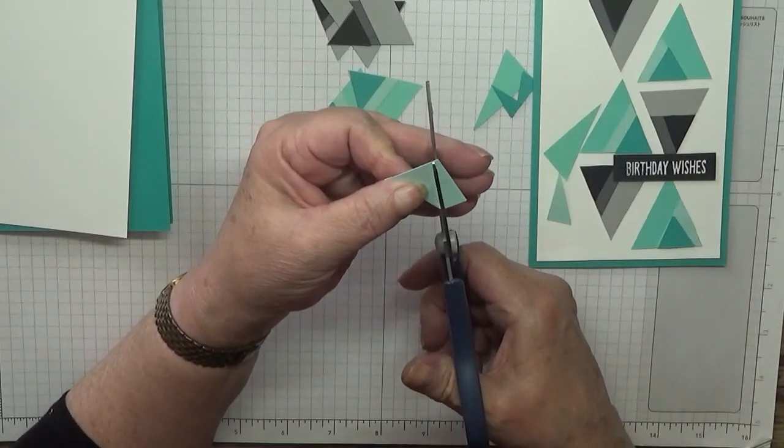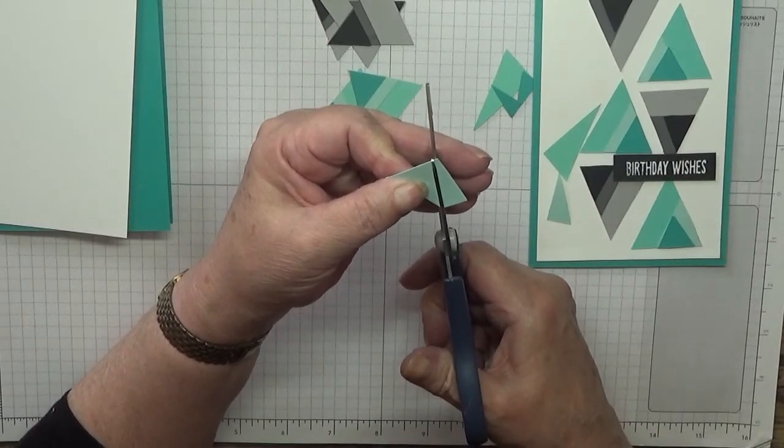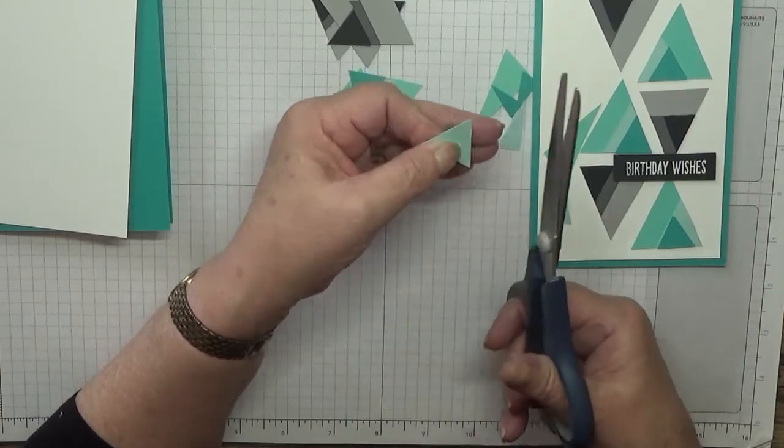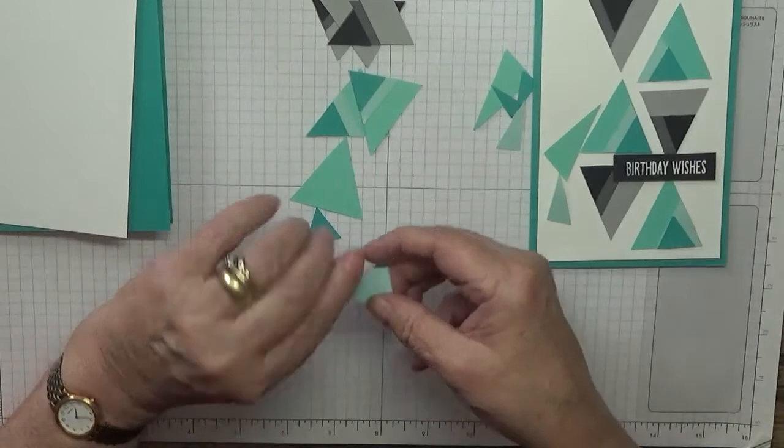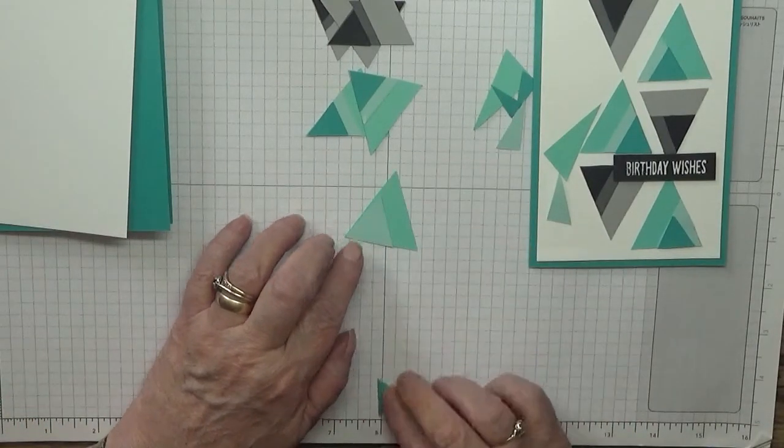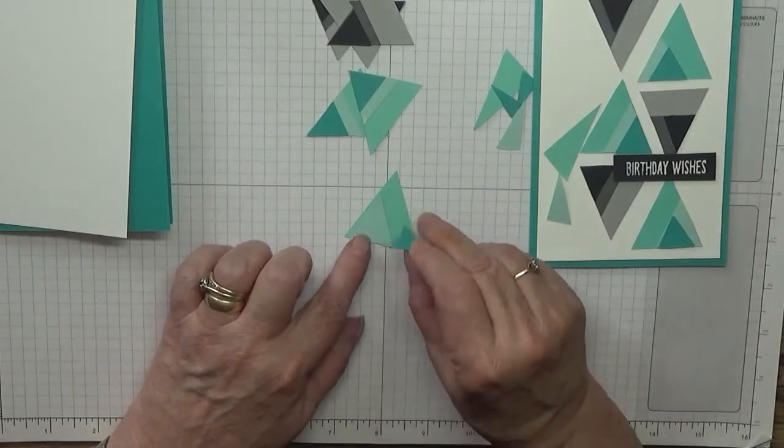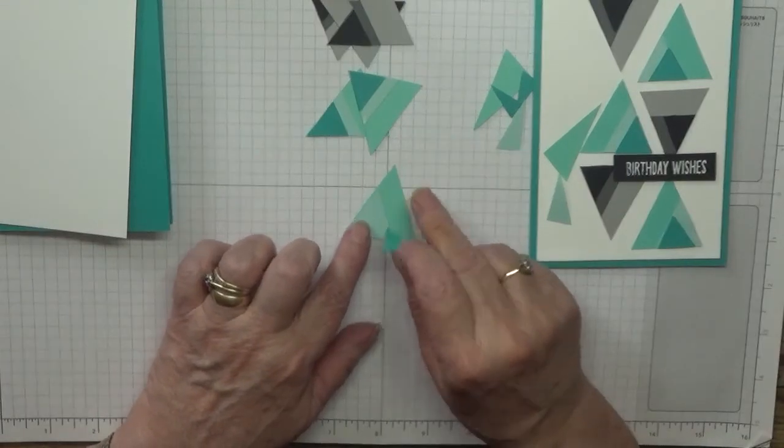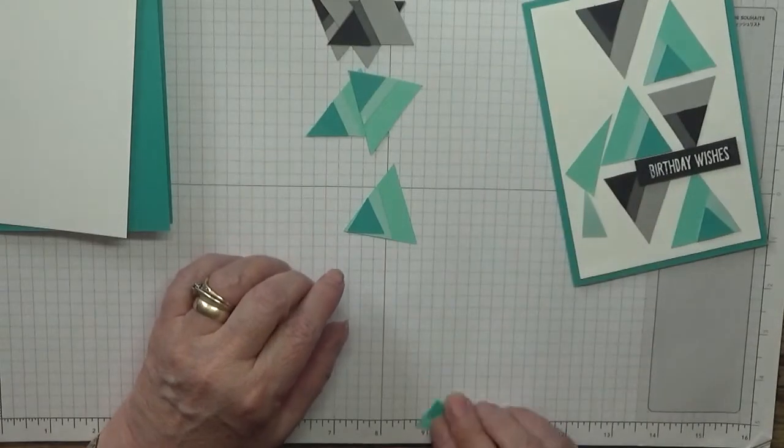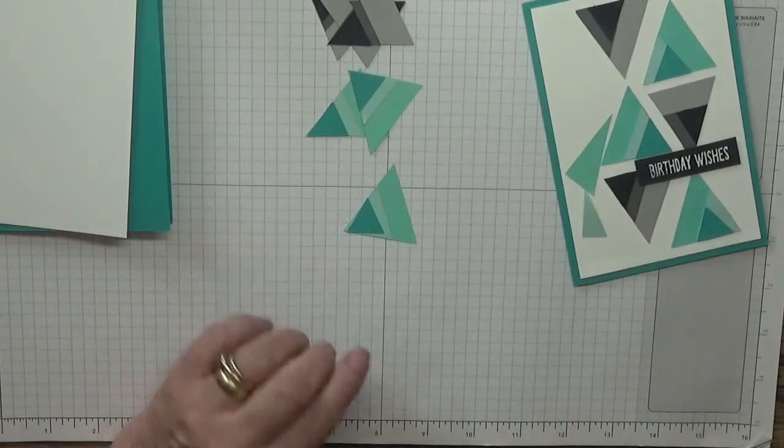Cut up from the corner to the middle, turn it around and do from the middle to the corner and that's us got our three triangles. Now when I've stuck these down I've stuck them down in different places.